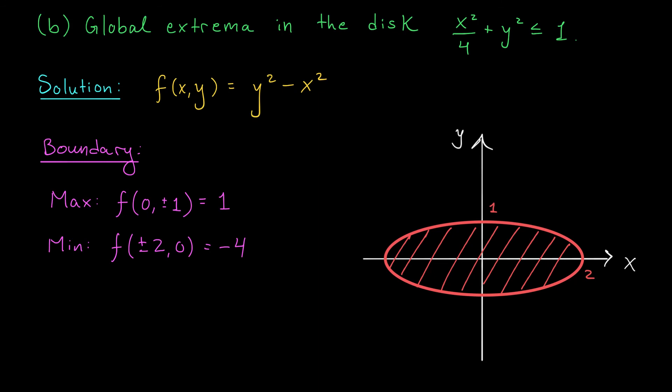We'll end this video with a quick look at part B. Here, we're trying to find the global extrema of our function f of xy in the elliptical disk, x squared over 4 plus y squared is less than or equal to 1. So now we're not only considering the boundary, but also the interior of this ellipse. Ah, but don't worry. This is easy once we've finished part A.